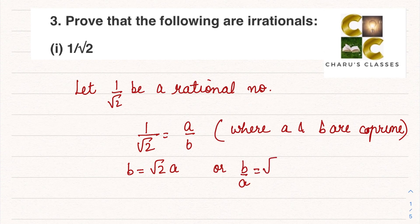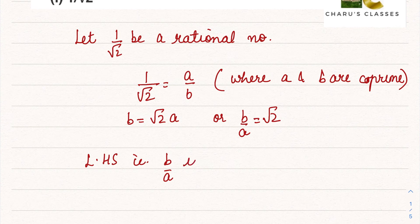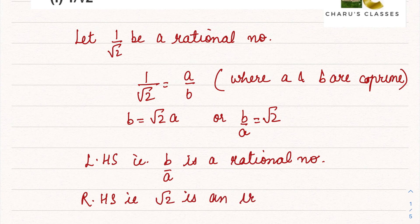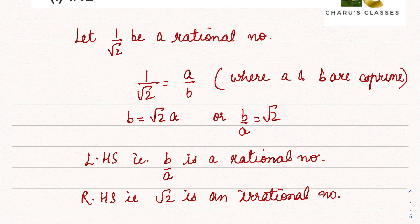Now, the left hand side — b by a — is in the form of p by q, so it is a rational number. The right hand side, root 2, is an irrational number. Since left hand side is rational and right hand side is irrational, our assumption was wrong, and therefore 1 by root 2 is an irrational number.